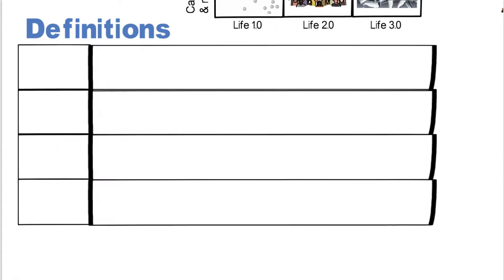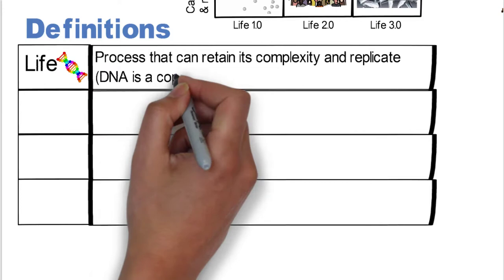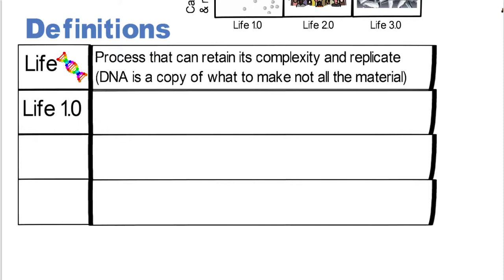One of the things that he then kind of puts everything into definition, so we have something to work with. And so he says, well, let's start with the definitions of what is life. And so he talks about how life is basically the process that can retain its complexity and replicate. That's his definition of life. And if you look at DNA, DNA is a copy of what it wants to make.